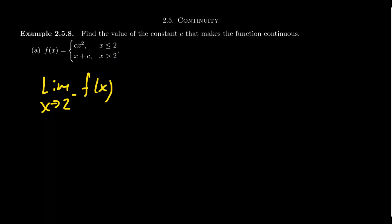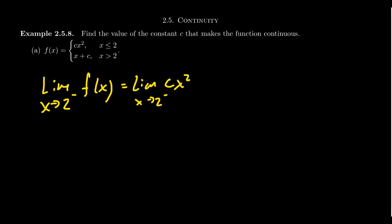If you're approaching two from the left — that is, you're a little bit less than two — you're going to use this domain and thus this part of the function. So the limit as x approaches two from the left of f(x) becomes the limit of cx² as x approaches two from the left. Because a parabola is a continuous function, we can compute this limit using direct substitution, giving us c times two squared, which is 4c. That's what the left-handed limit turns out to be.